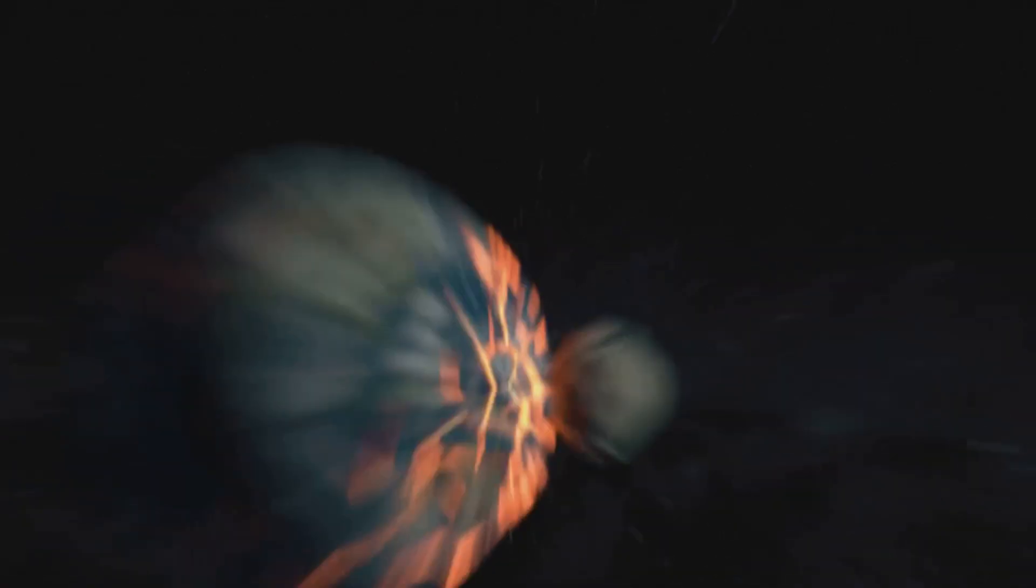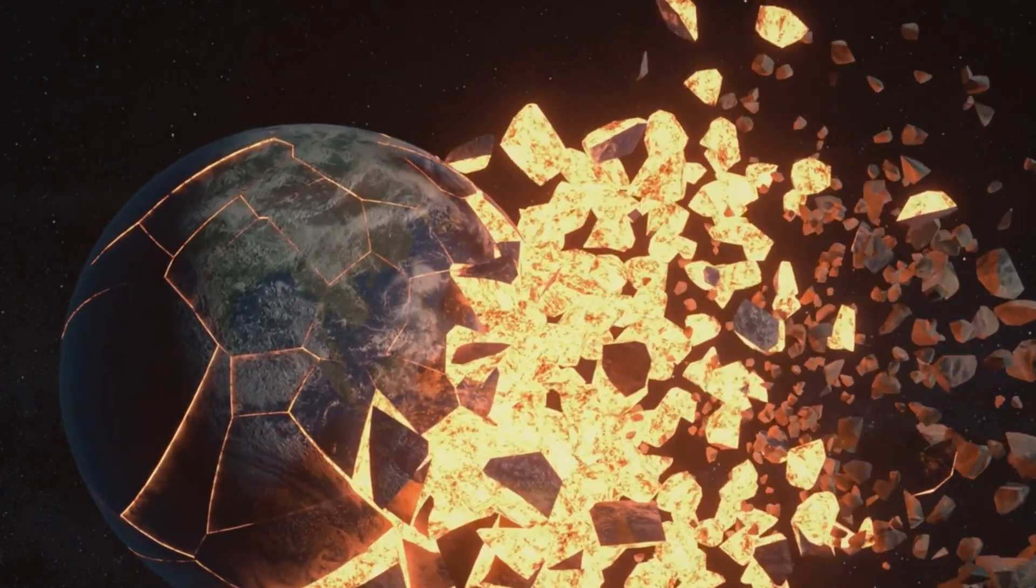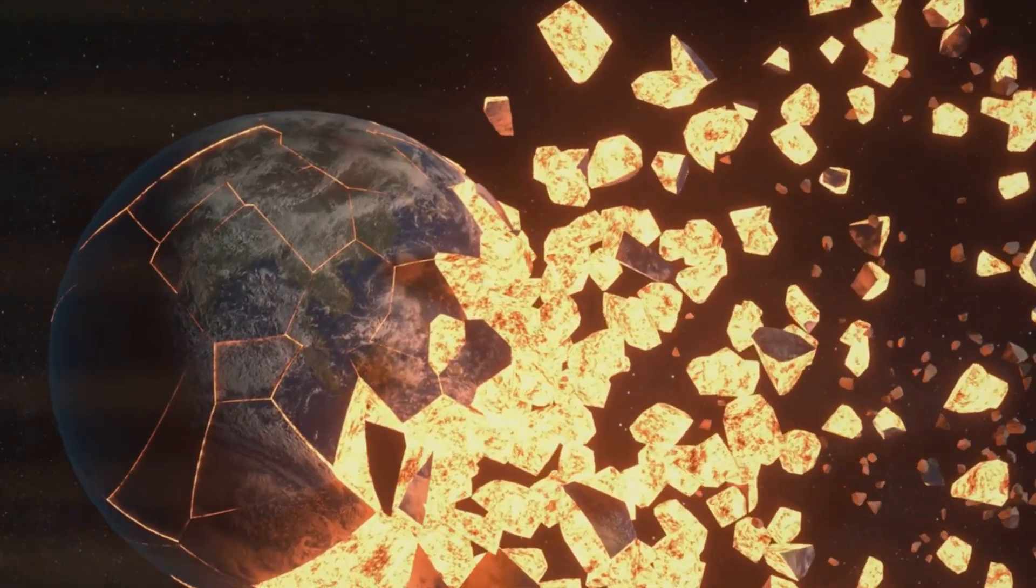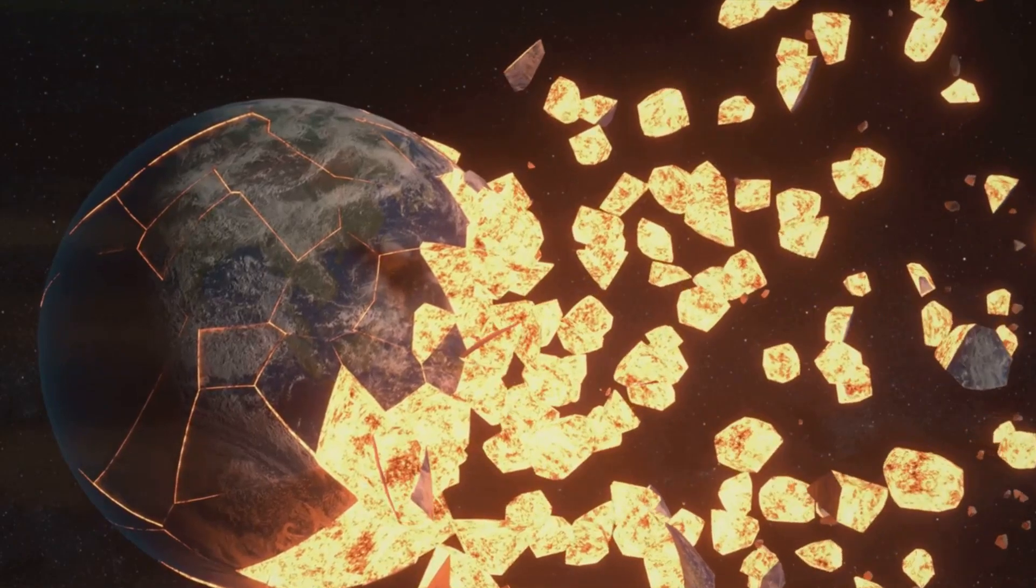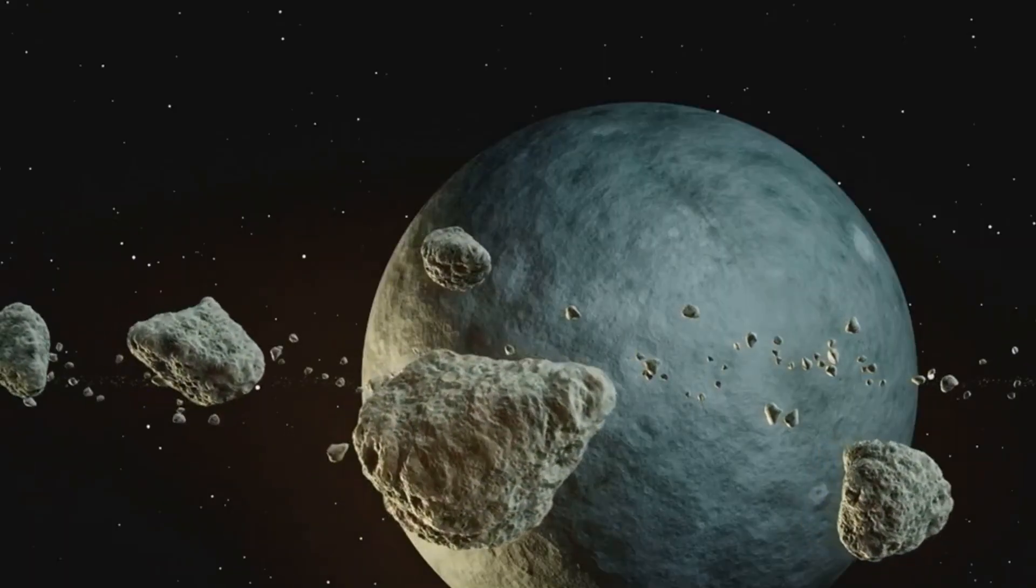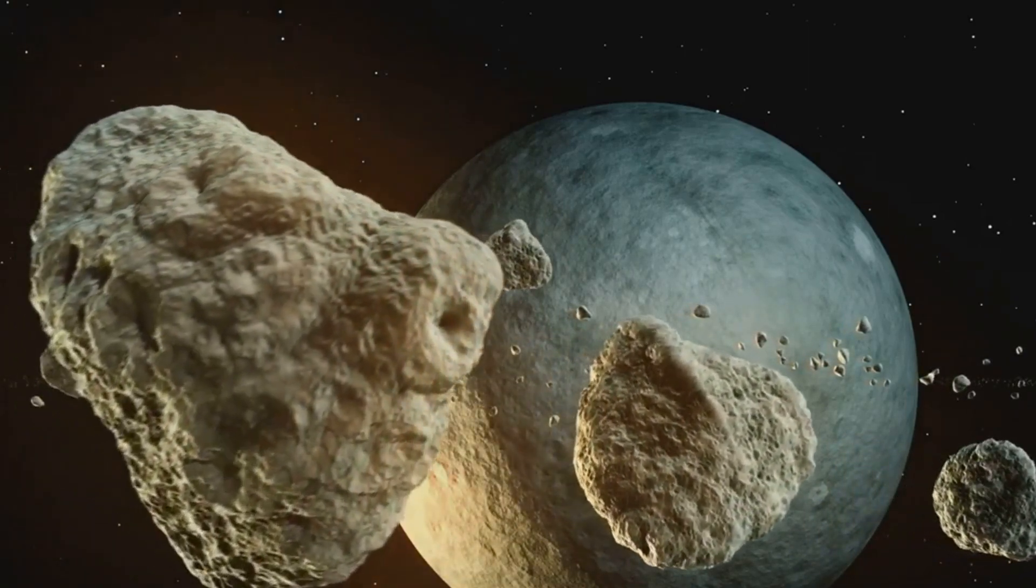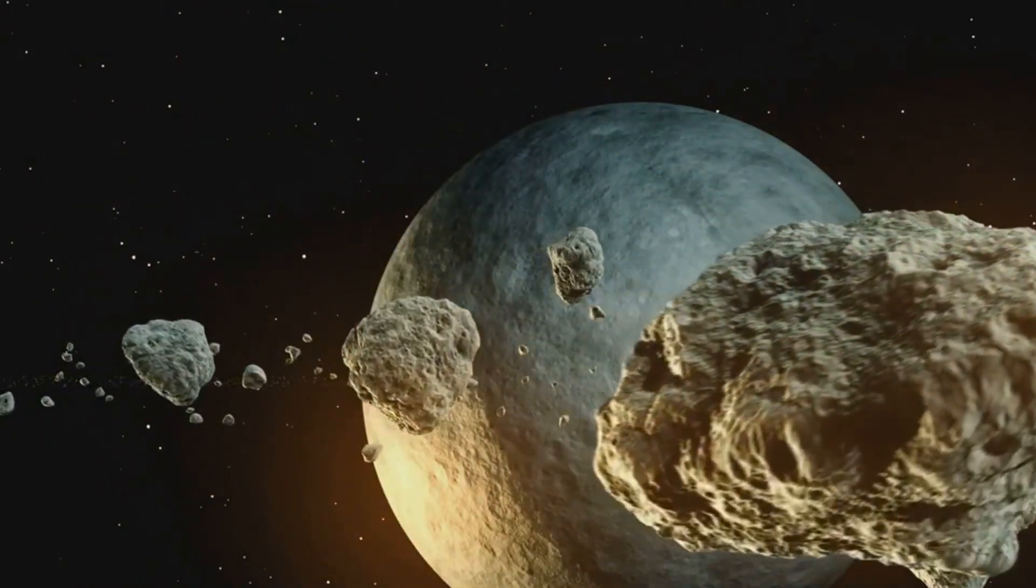This catastrophic event would have caused a debris cloud to form around Earth, made up of molten rock and vaporized material. Over time, this debris gradually coalesced, forming what we now know as the moon. It's a theory that's as dramatic as it is scientifically compelling, providing a plausible explanation for many of the moon's unique properties and its similarities to Earth.